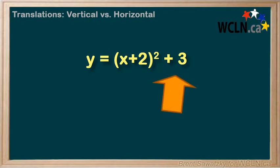the plus 3 at the end here tells us that we're shifting the base quadratic up by 3 in a positive direction.